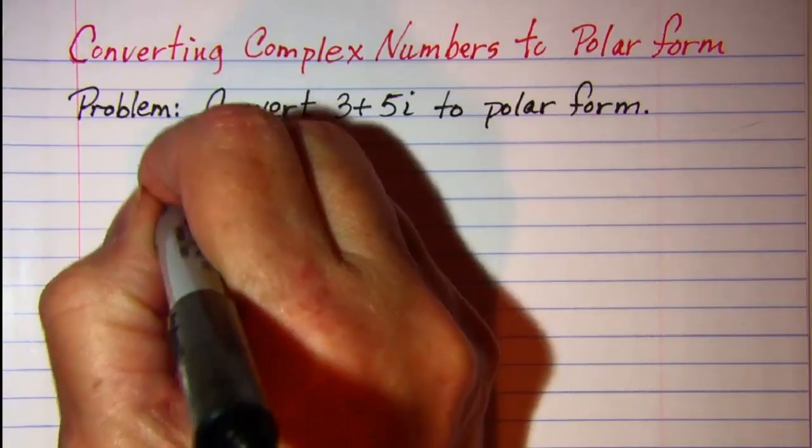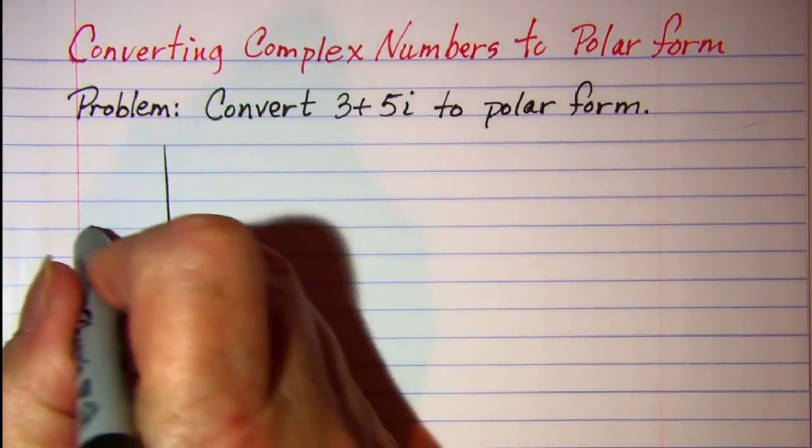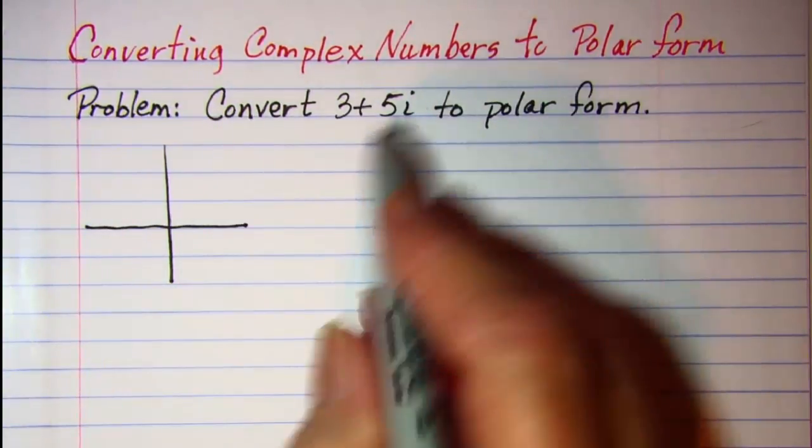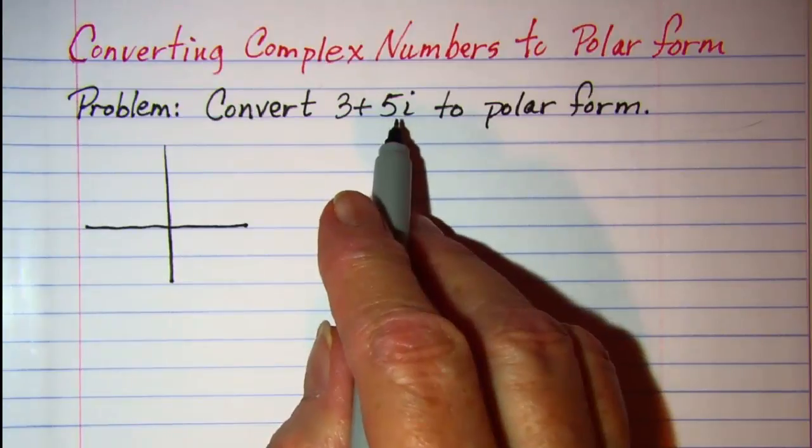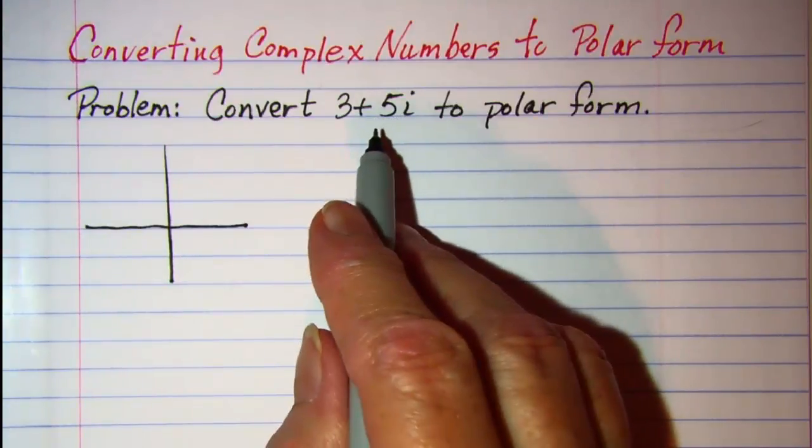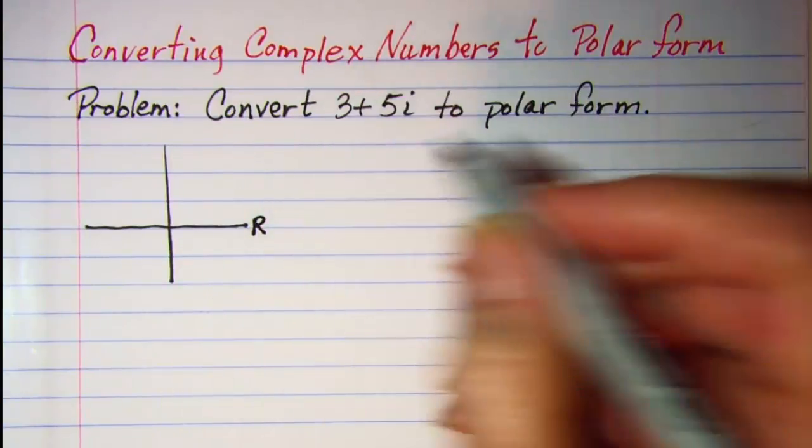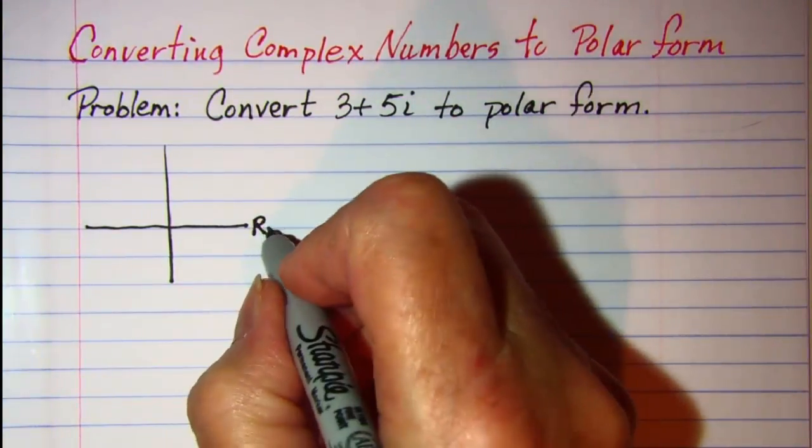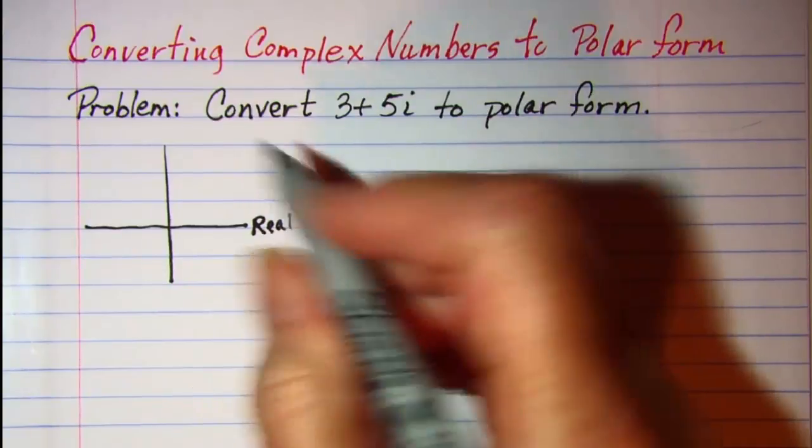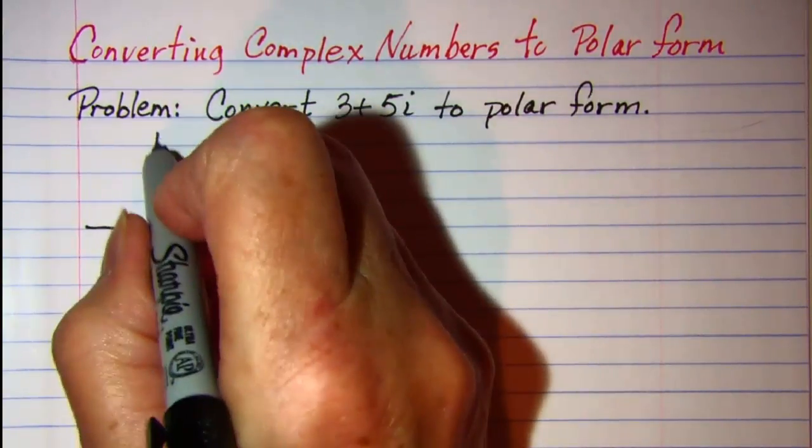Now let me draw a sketch of this. We know that this is rectangular form and when you have a complex number your horizontal axis is your real axis and your vertical axis is your imaginary axis.